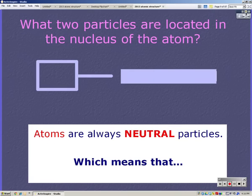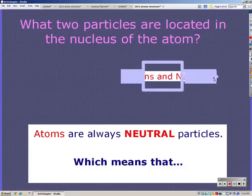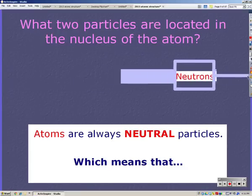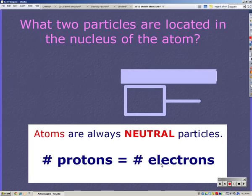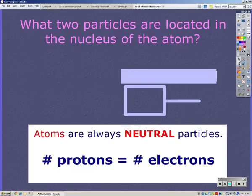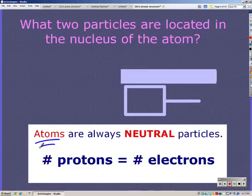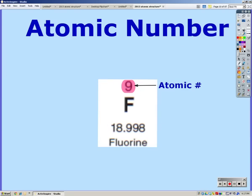So which two particles are located in the nucleus? Protons and neutrons. So atoms are always neutral particles, which means that the number of protons has to equal the number of electrons, because those are the two charged particles. Again, this is atoms. Atoms are neutral. Later we'll talk about ions, and ions are not neutral. But for now, our protons equal our electrons.